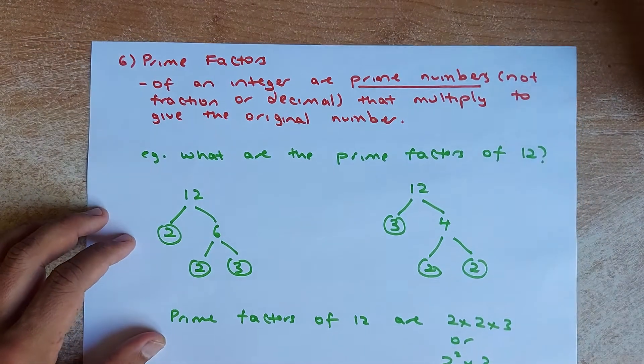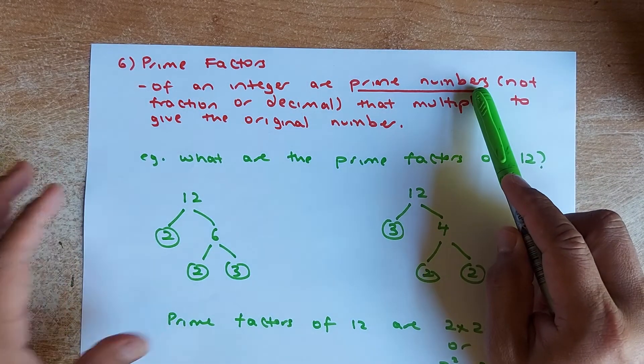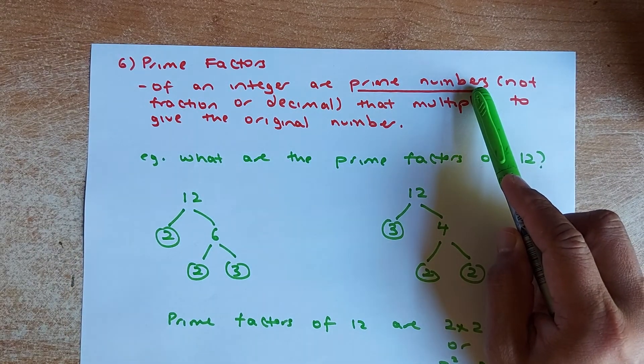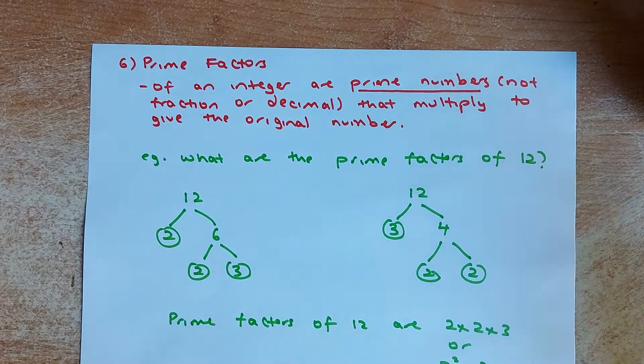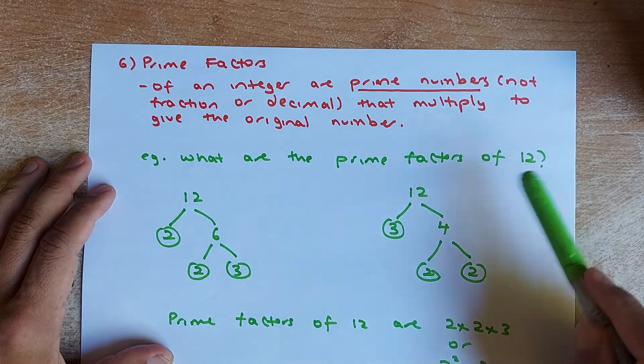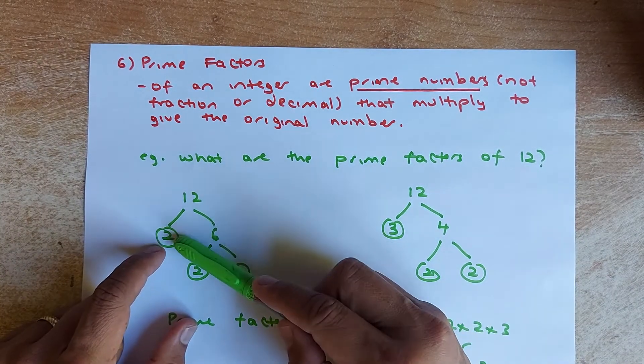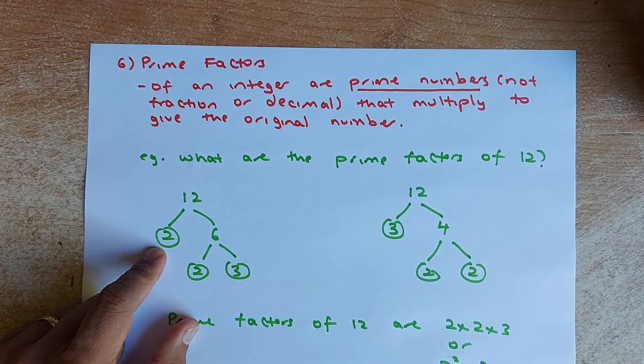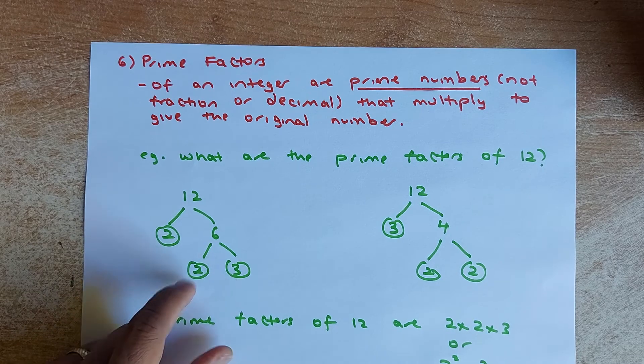And the last thing we're going to do today is calculate the prime factors. So prime factors of an integer are prime numbers, not decimals or fractions, that multiply to give the original number. So for example, what are the prime factors of 12? 12 can be multiplied by two numbers, 2 and 6. So 2 is a prime number, leave it there. 6 can be further broken down into 2 and 3, so these are prime numbers.